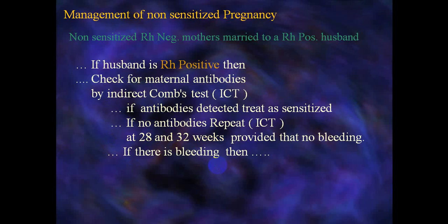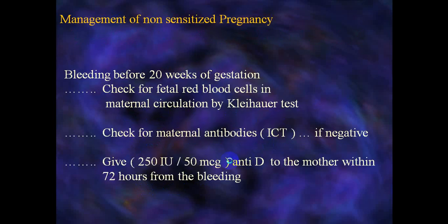If the husband is RH-positive, check for maternal antibody by indirect Coombs test. If antibody is detected, treat accordingly. Prophylactic anti-D (RhIG) is recommended at 28 and 32 weeks, provided there is no bleeding. If there is bleeding, additional management is required.